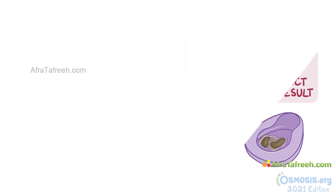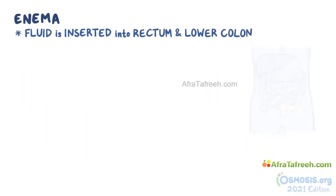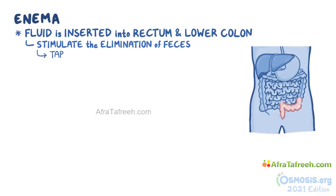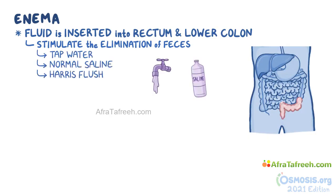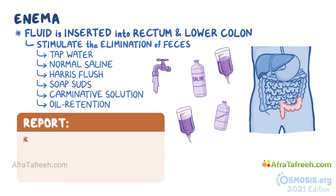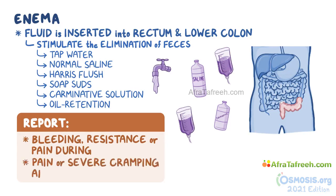As a quick recap: an enema is when fluid is inserted into the rectum and lower colon, usually done to stimulate the elimination of feces. Depending on the solution, there are tap water, normal saline, Harris flush, soap suds, carminative solution, and oil retention enemas. Stop administration and tell the nurse if bleeding, resistance, or pain occurs during tube insertion, or if the person has pain or severe cramping afterwards.